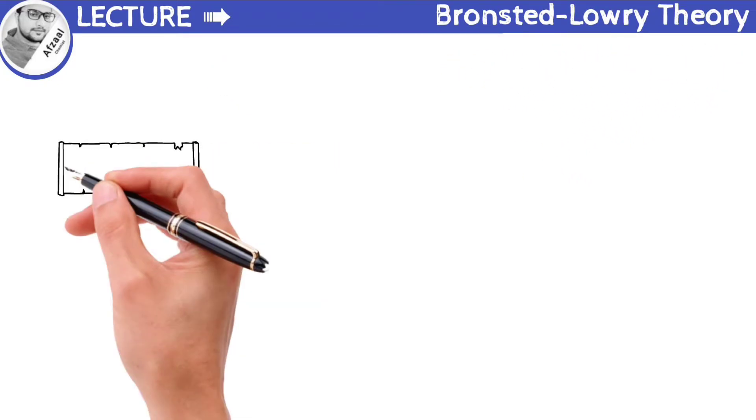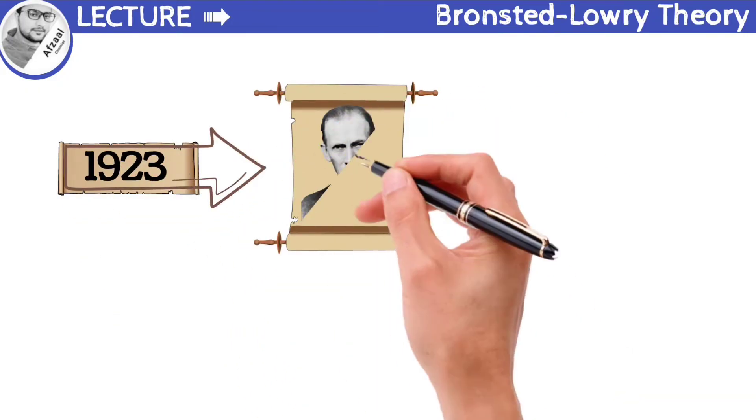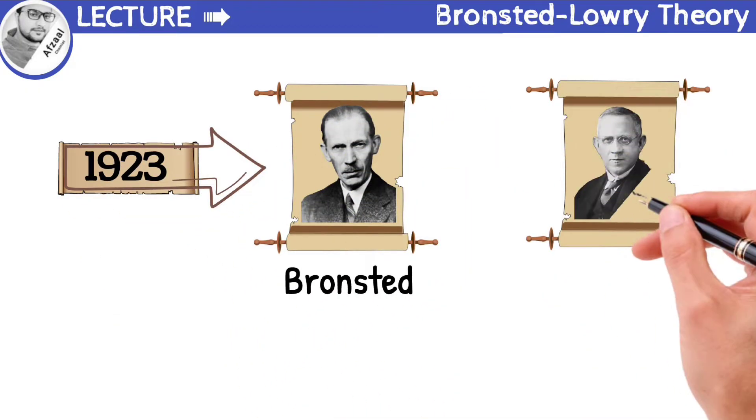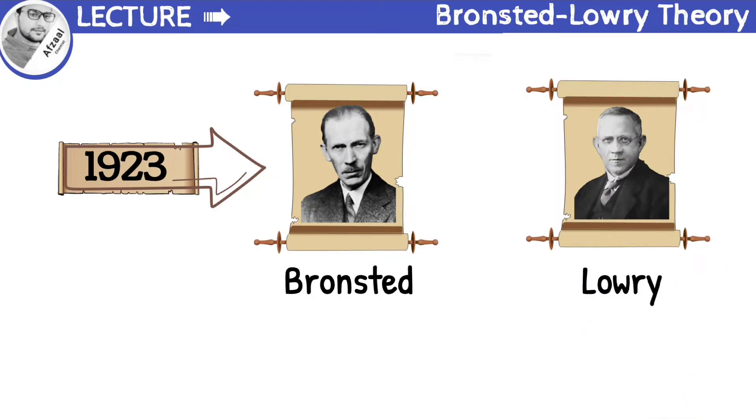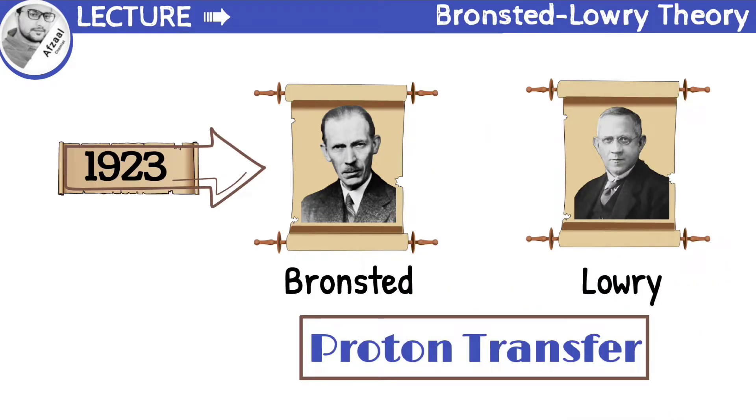In 1923, the Danish chemist Bronsted and the English chemist Lowry independently presented their theories of acids and bases that are based on proton transfer.